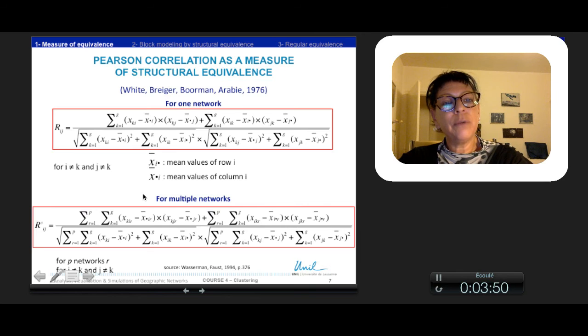Other authors proposed a form of Pearson correlation between nodes i and j relations. This index standardized all the calculation by the mean value in row and columns. So each time it is the value minus the mean of row and columns. It is a form very similar to the Pearson correlation. And this index can be done for one kind of relation, so with one network, or several kinds of relations for multiple networks.